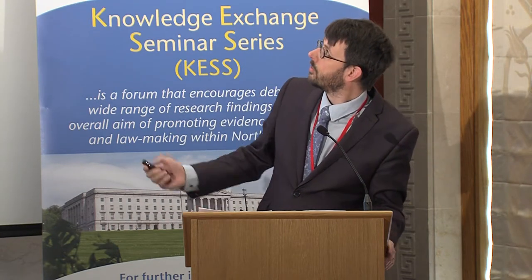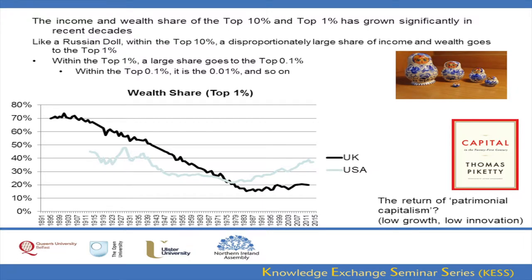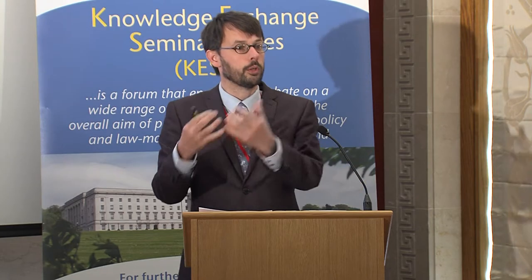Using the analogy of nested Russian dolls — the matryoshka — helps to understand how the distribution of income and wealth has changed through analysis of tax data. This information is not apparent in the standard Gini coefficient, which is based on survey data. What we see is that not only does the top 10 percent have a disproportionately larger share of income and wealth, but within that group the top 1 percent has a disproportionately large share; within the top 1 percent it's the 0.1 percent who has the lion's share, and within that group, the 0.01 percent, and so on.